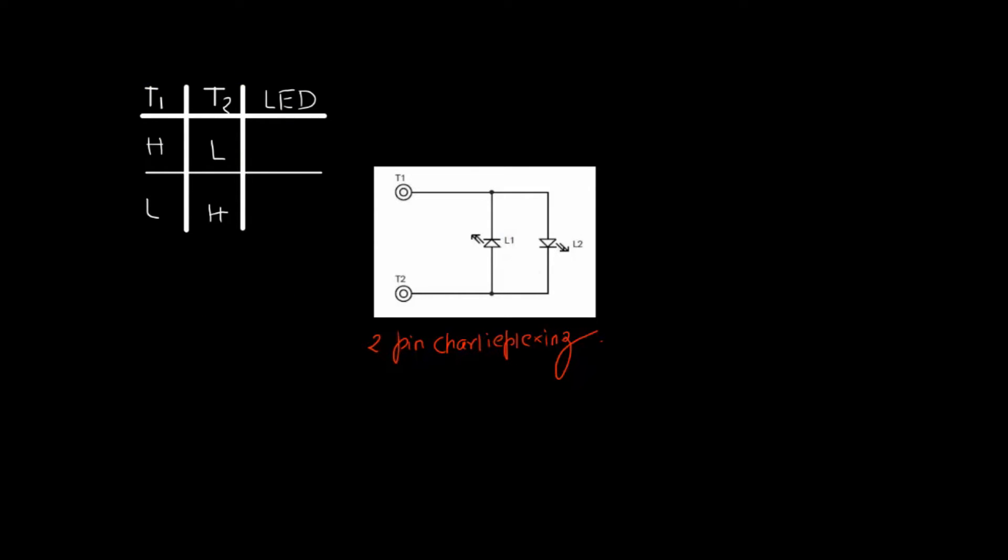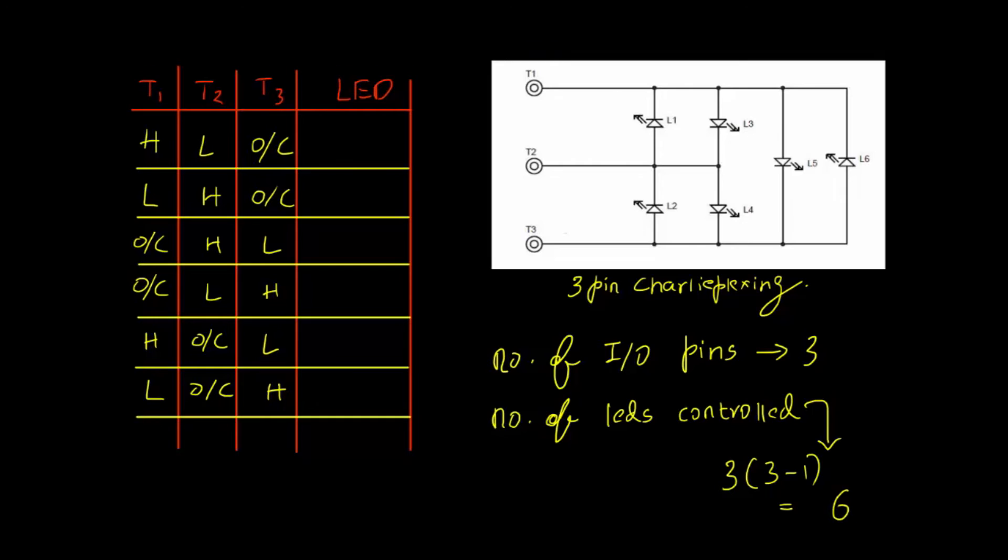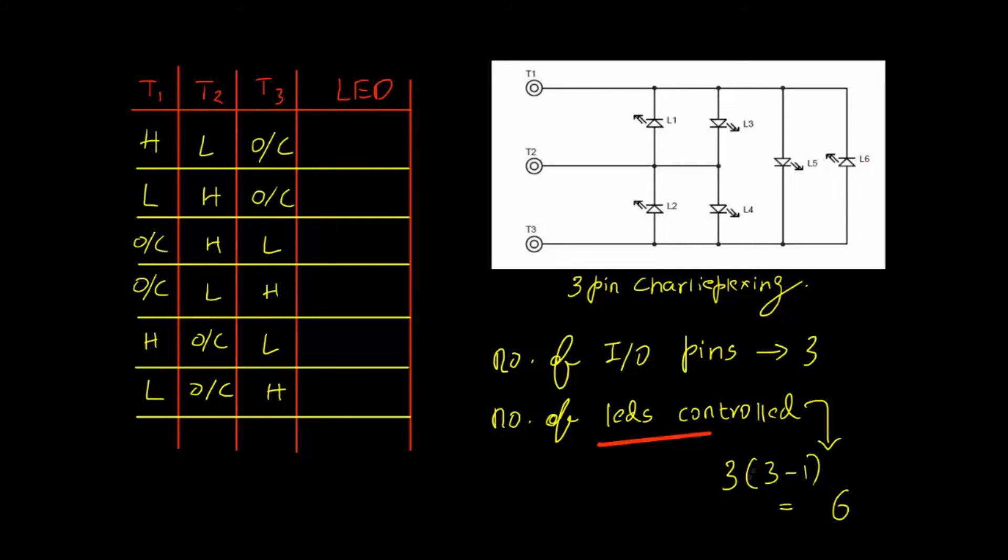This is a circuit for two-pin Charlie Plexing. You can say there are two terminals T1 and T2. If we put high at T1 and low at T2 what will happen? L1 will be in reverse bias and L2 will be in forward bias. So L2 will light up and L1 will be off. In this condition L2 will light up and if we put the opposite thing L1 will light up. This is a two-pin Charlie Plexing but you will get the concept more clear in the three-pin Charlie Plexing. This is the three-pin Charlie Plexing circuit and there is six LEDs as you can see. From where we get those six LEDs, the number is because we have used the number of input pins as three and number of LED controlled can be three into three minus one that is six.